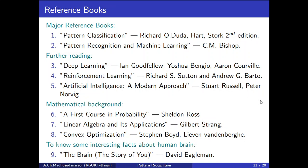If you want to have a good mathematical background related to artificial intelligence, you can go through three books: A First Course in Probability by Sheldon Ross, Linear Algebra and Its Applications by Gilbert Strang, and Convex Optimization by Stephen Boyd. To know some interesting facts about the human brain, you can go through The Brain: The Story of You by David Eagleman — it reads almost like a novel.